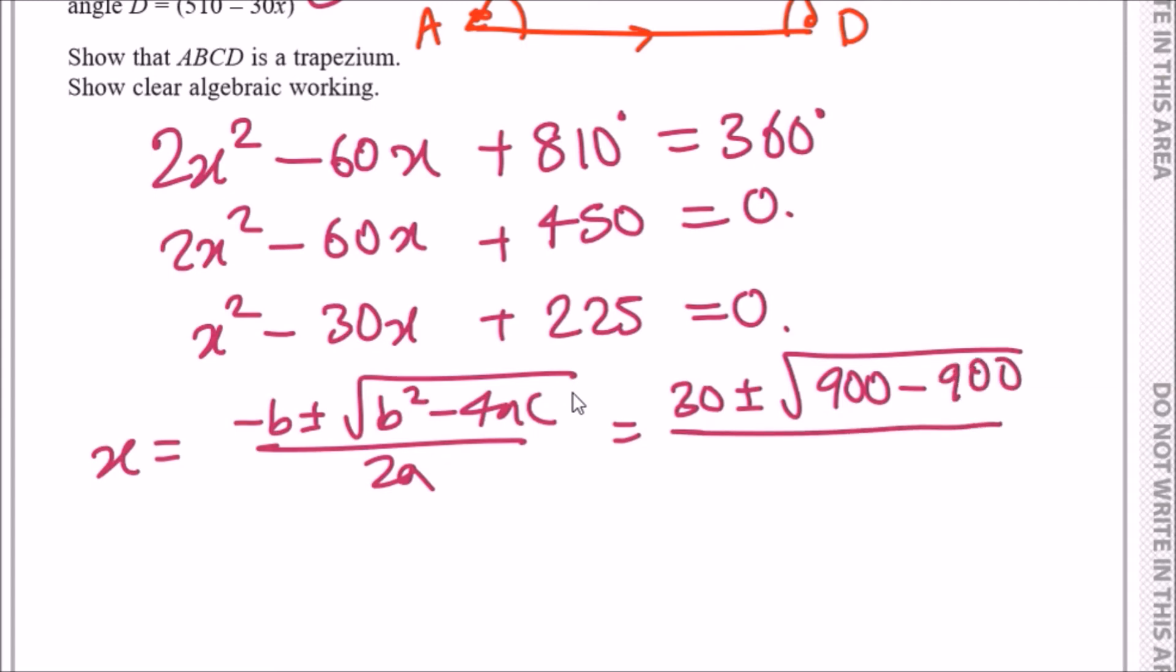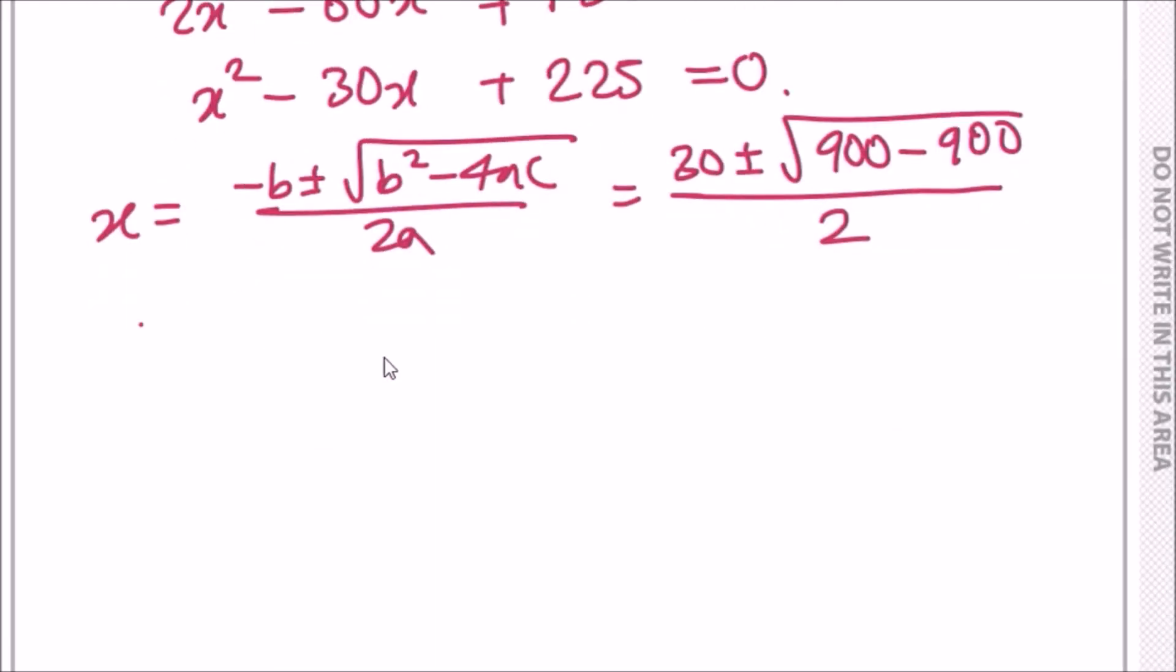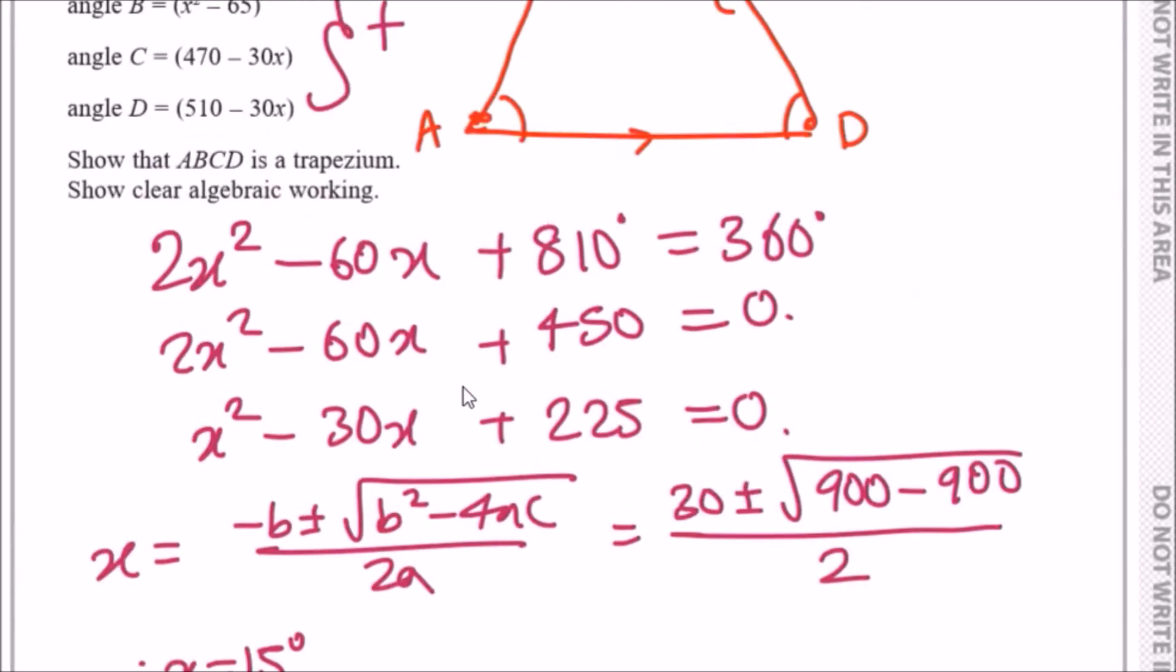Because it's zero, it's just going to be 30 over 2, and the answer for x would be 15 degrees. Now that we found x, let's go back to the top.